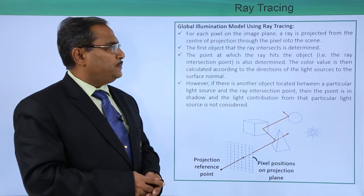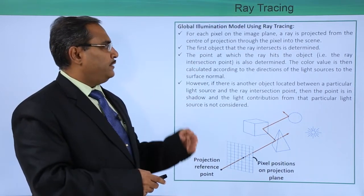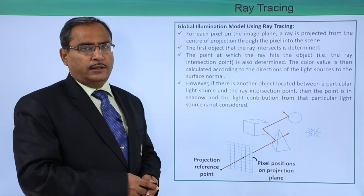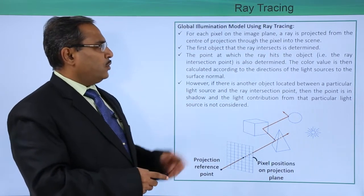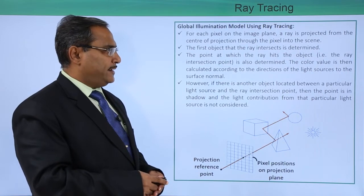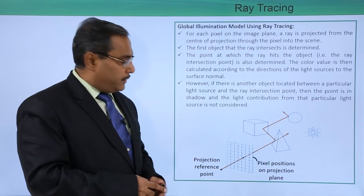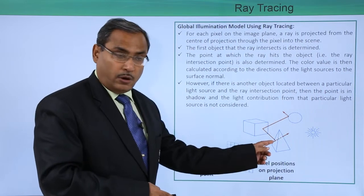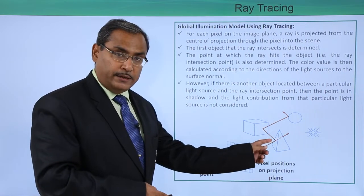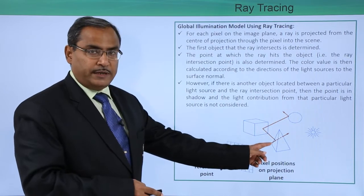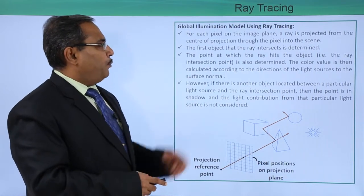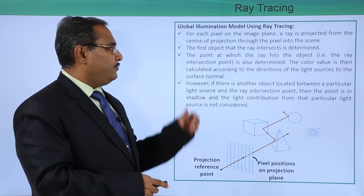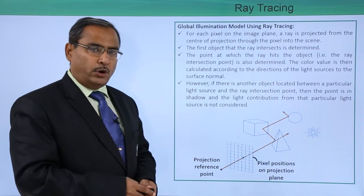For each pixel on the image plane, a ray is projected from the center of projection through the pixel into the scene. The first object that the ray intersects is determined, and here this object has been determined.